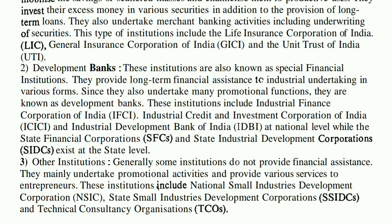The third category is Other Institutions — those that do not fit into the first two categories. Generally, some institutions do not provide financial assistance or loans. They mainly undertake promotional activities and provide services to entrepreneurs. These institutions include the National Small Industries Development Corporation (NSIC), State Small Industries Development Corporations (SSIDCs), and Technical Consultancy Organizations (TCO).